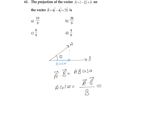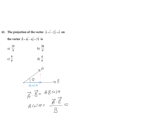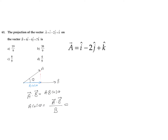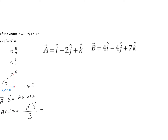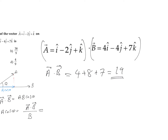We need to find out the value of a dot b first. Let us see what is the dot product of these two vectors. If we find out the dot product of vector a and vector b, that is one into four which equals four, and minus two into minus four which equals eight. Next, one into seven which equals seven. So a dot b is equal to 19.